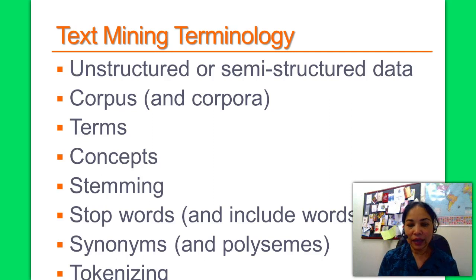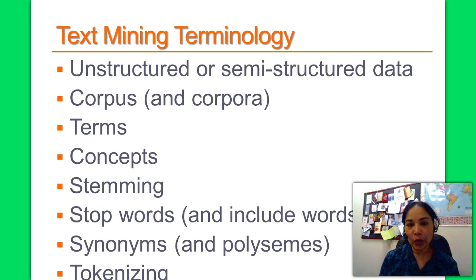Synonyms are words with identical meanings, such as movie, film, and motion picture. Polysemes, or homonyms, are words that are spelled the same but have different meanings — for example, 'bow' can mean a weapon, the front of a ship, a bend, or a hair bow.